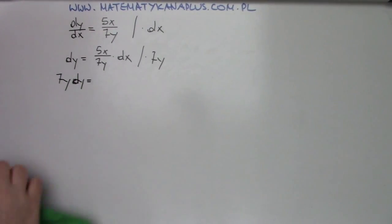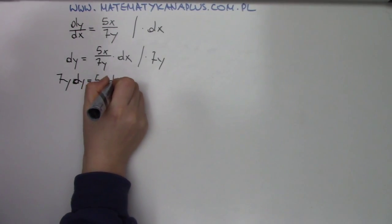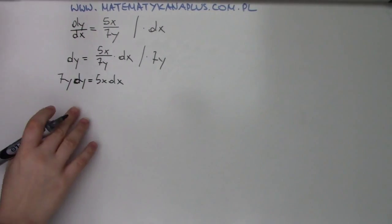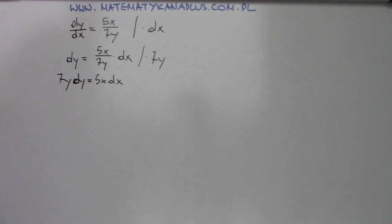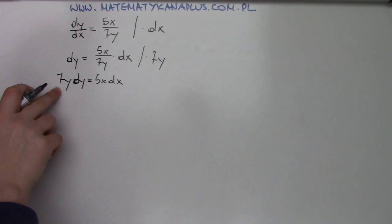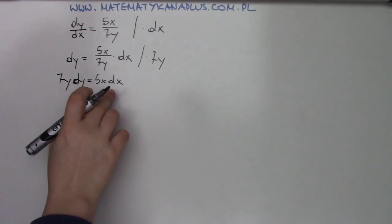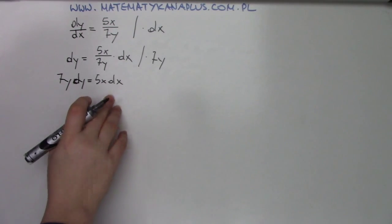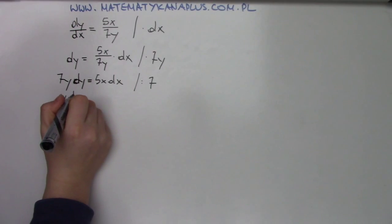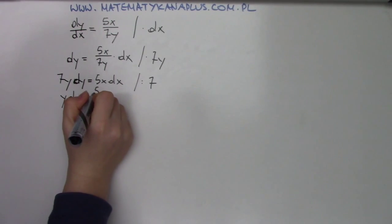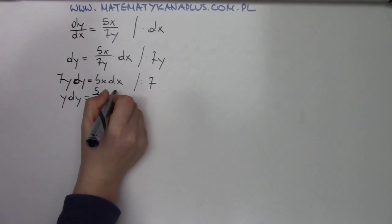Now when we look at this we see that we have y's on left and x's on right. Usually we try not to take the constants on the left and we will try to put them on the right with the x's. So we will divide by 7 and we will get something like this.